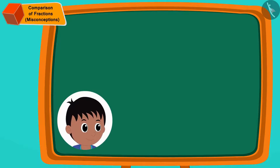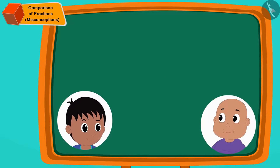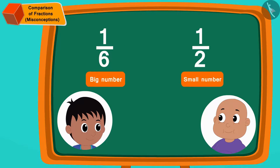Now Raju once again started teasing Bablu that he got one-sixth part of sandwich and Bablu got one-by-two part of sandwich. And because six is a larger number than two, he got a larger portion of the sandwich. Children, is Raju's statement correct?